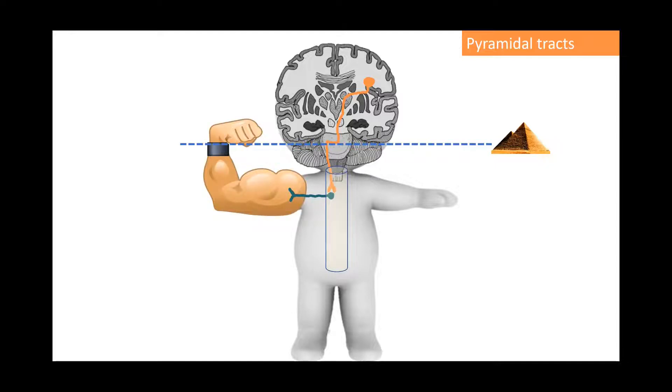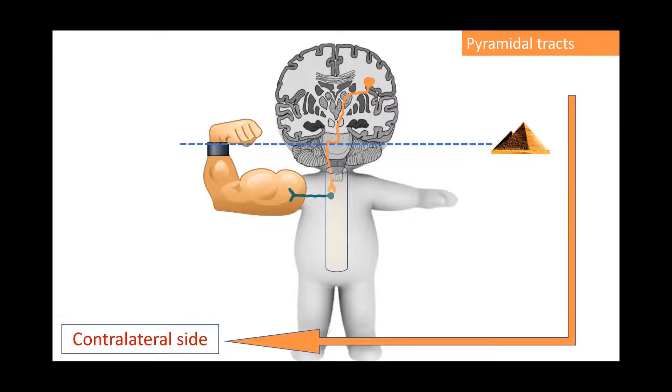Well, we can conclude that the pyramidal tracts will be responsible for the motor control to the contralateral side of the body. But that's a normal patient. And this is not a normal patient.